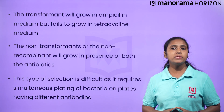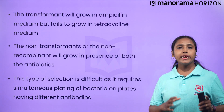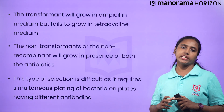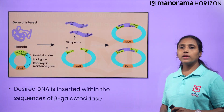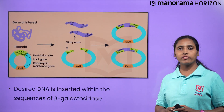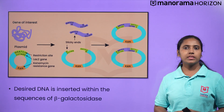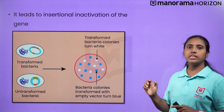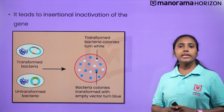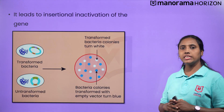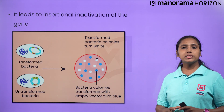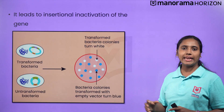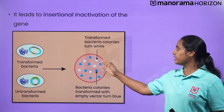The selection of recombinants by antibiotic inactivation is a cumbersome procedure, requiring simultaneous plating on two plates with different antibiotics. Alternative selectable markers have been developed that differentiate recombinants from non-recombinants based on their ability to produce color in the presence of a chromogenic substrate. Desired DNA is inserted within the coding sequence of an enzyme called beta-galactosidase. This leads to insertional inactivation. If the plasmid has no insert, the chromogenic substance produces blue colonies. Insertional inactivation results in colorless colonies, which are identified as recombinant colonies.